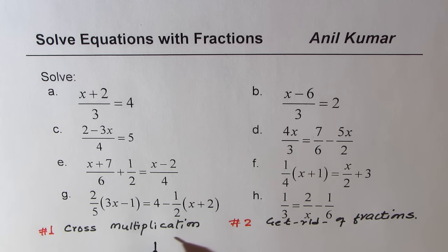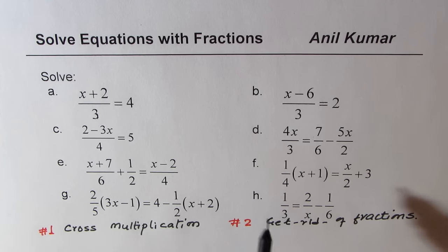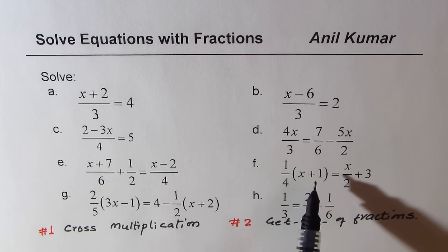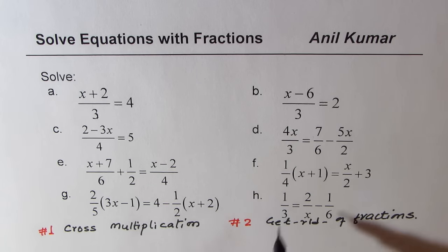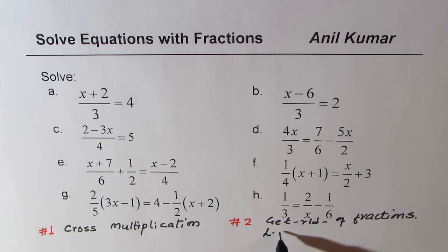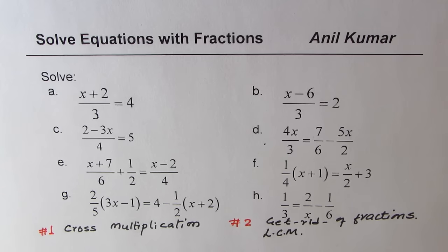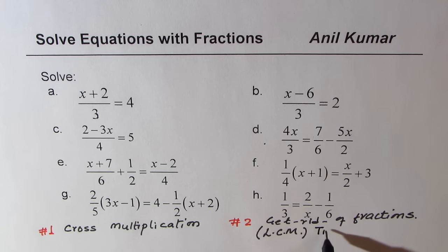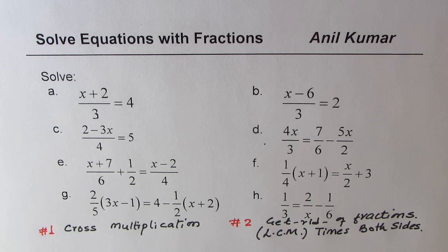Cross multiplication also helps to get rid of fractions. Let's say the number is 3 here — we'll just take it on the other side to get rid of 3 from the left side. Sometimes what happens is we have different numbers; for example, here we have 3 terms. So in this case, we'll look for the LCM. We'll multiply both sides by the lowest common multiple, then solve as a linear equation without fractions.